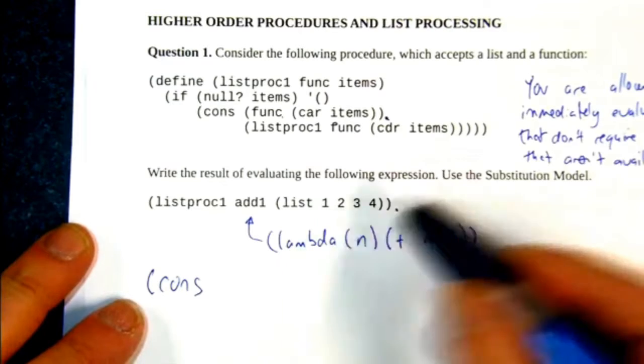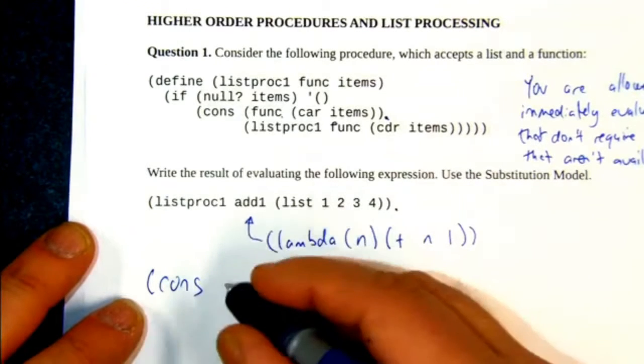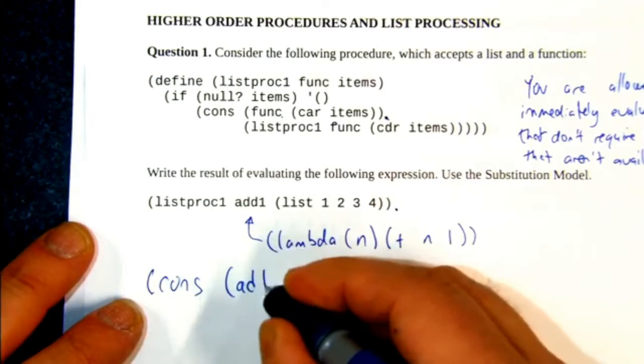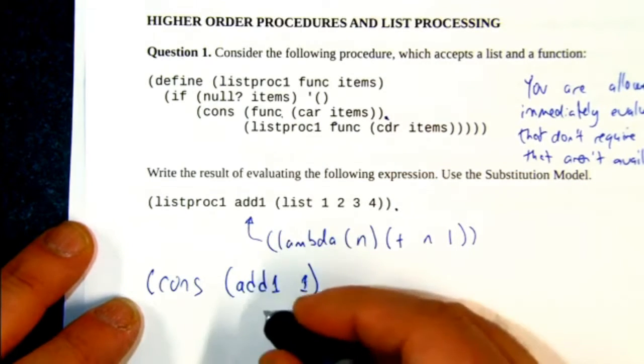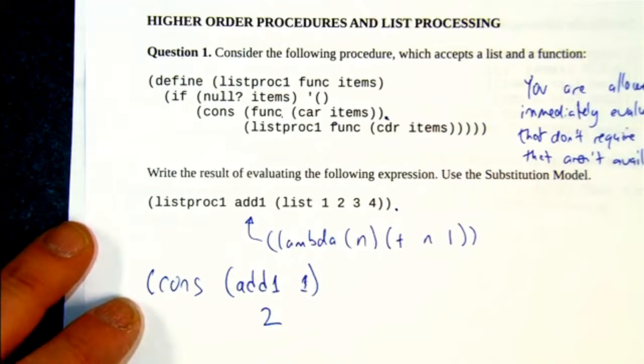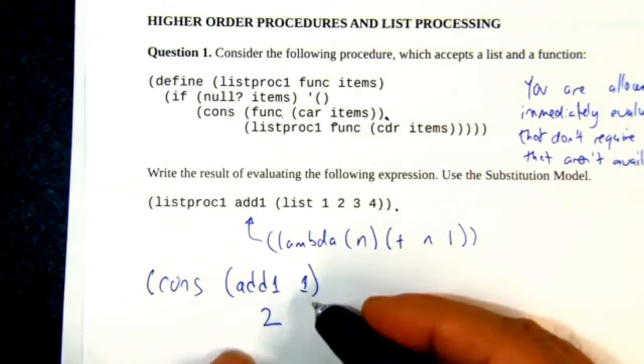And then it applies it to car of items. Items is the list 1, 2, 3, 4. So basically what we get is add1 of the car of that list, which is 1, which becomes a 2 immediately. There's no delay. That's like, add1 of 1 is 2.